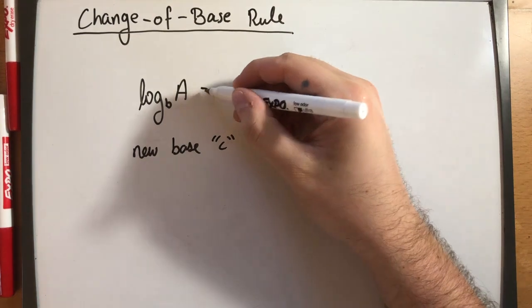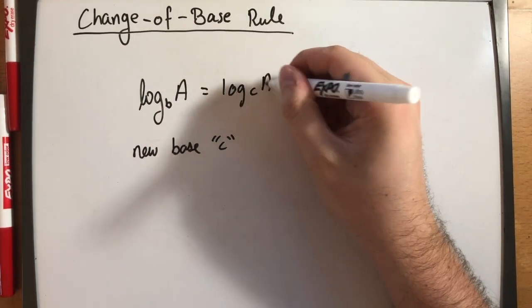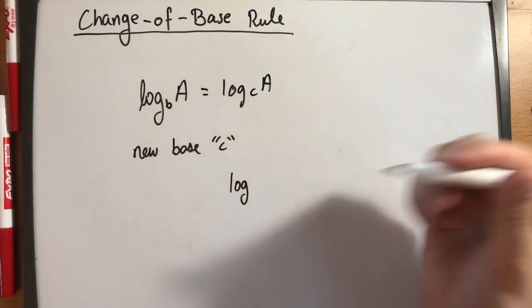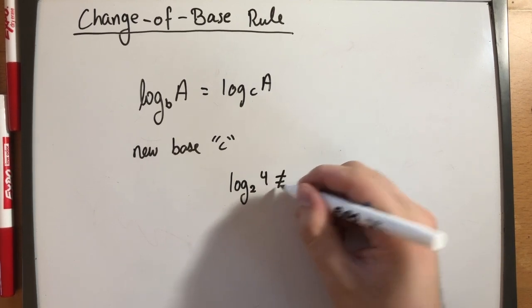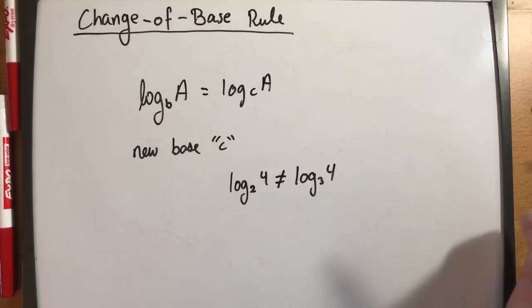Now it does not make sense to say that this is equal to log base C of A. This does not make sense and I can prove it to you. For example, log base 2 of 4 is not going to be equal to log base 3 of 4. These are two completely different problems.